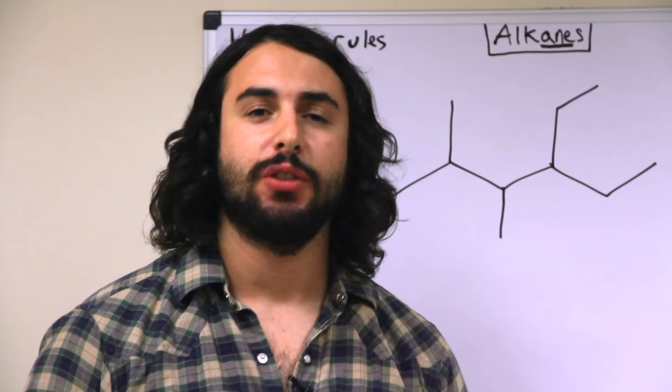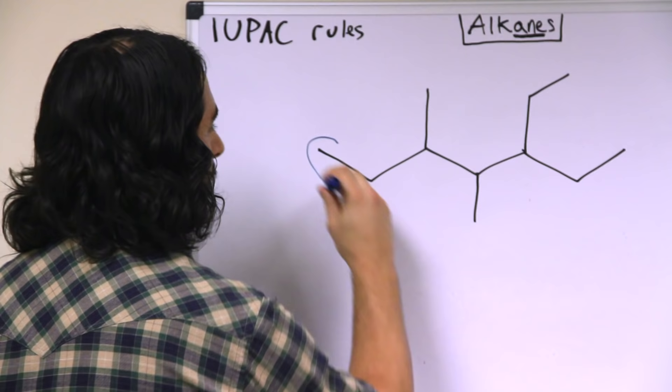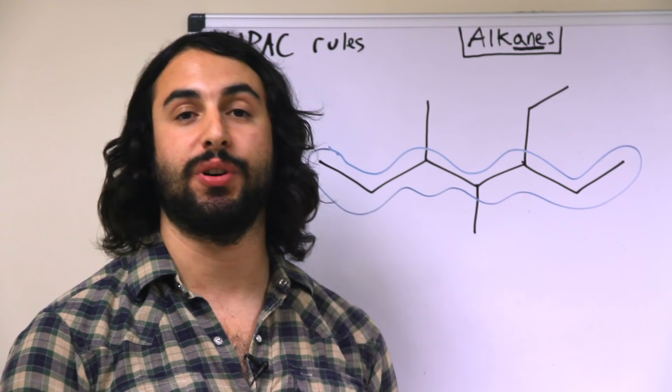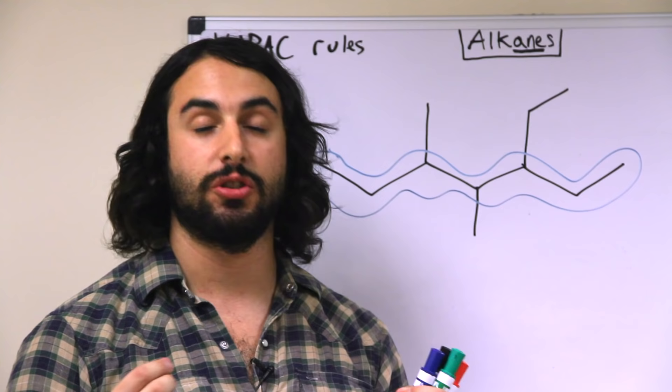Let's look at a slightly trickier example. Once again, the first thing we're going to do is identify the longest carbon chain. Now in the case that we have a substituent occurring at the same position regardless of whether we begin numbering from the left or the right, we are going to give priority to the substituent that occurs soonest alphabetically.